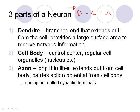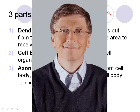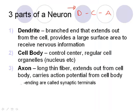The dendrite is the branching end that extends out from the cell and provides a large surface area to receive nervous information — this is where the stimulus comes in. The cell body controls the nerve; just like any other cell, it contains organelles and a nucleus.